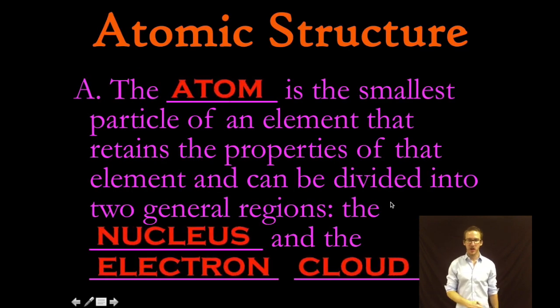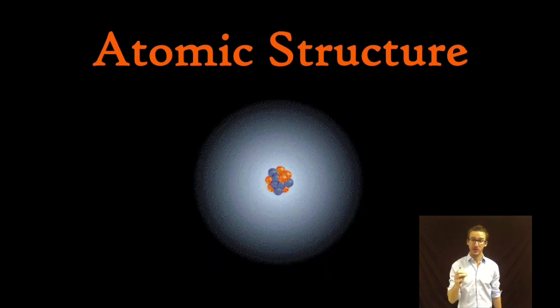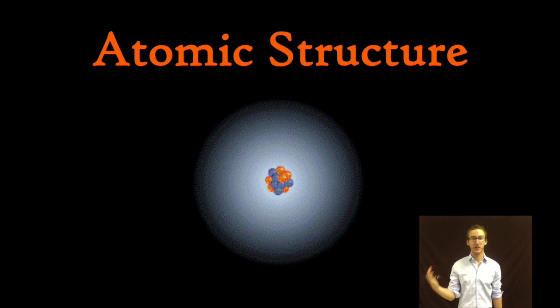Okay so to start things off, the atom is the smallest particle of an element that retains the properties of that element and can be divided into two general regions, the nucleus and the electron cloud. The atom is basically the nucleus and what's called the electron cloud or the empty space surrounding the nucleus.